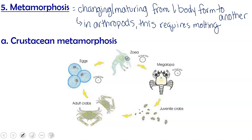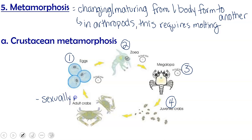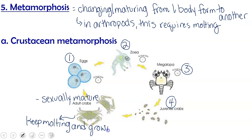Crustaceans start as eggs and hatch into typically pelagic or planktonic zoea. They then metamorphose and molt again to become a megalopa, and eventually juvenile crabs. Juvenile crabs go through several molts and eventually become adults, who are sexually reproductive. Unlike most insects, crustacean adults can keep molting and growing throughout their lives.